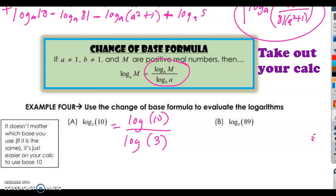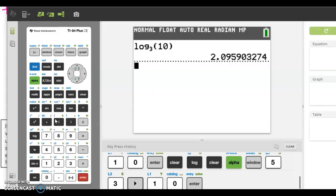We chose base 10 because we can easily type that into the calculator. Or we could beforehand, before the calculator could change the base. So we're just going to choose log base 10 of 10, and that's over log base 10 of 3.